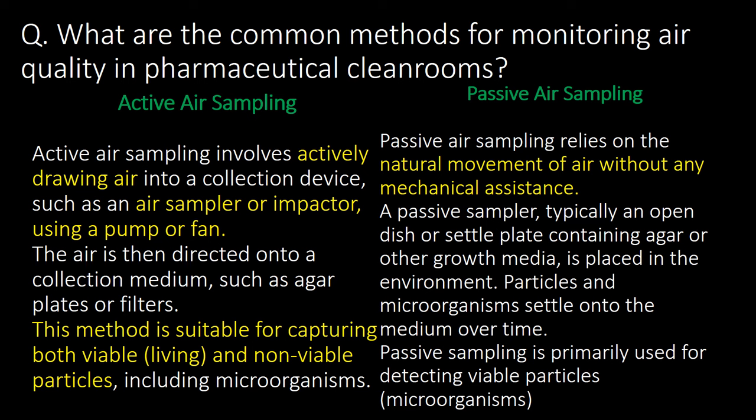Passive air sampling relies on the natural movement of air without any mechanical assistance. A passive sampler, typically an open dish or settle plate containing agar or other growth media, is placed into the environment. Particles and microorganisms settle naturally onto the medium over time. Passive sampling is primarily used for detecting viable particles and microorganisms.